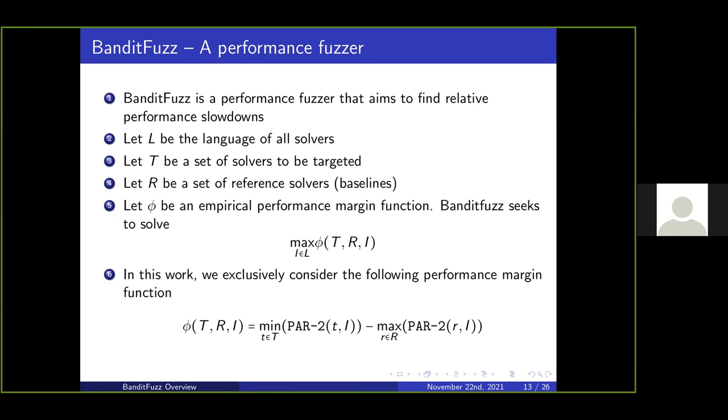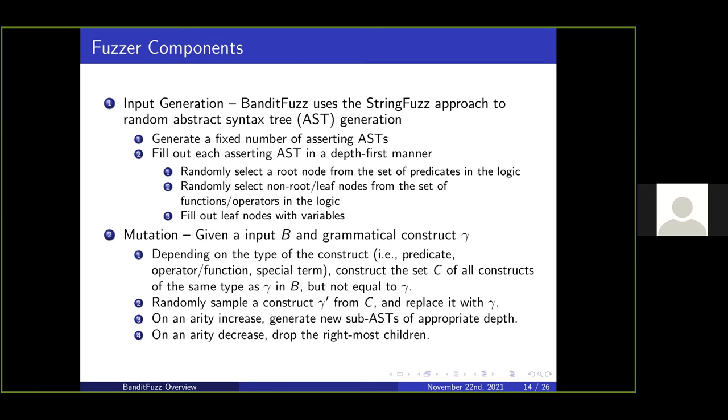We have two key components. The first is the input generator, fairly straightforward and inspired by other tools like StringFuzz. We create an AST and populate it randomly based on the problem. We pick a predicate for the root, fill it in with other constructs, then fill it out with literals or variables. For mutation, we ask the agent to fix a construct and insert a novel occurrence into the formula. We enumerate all constructs of the appropriate sort, randomly select one, fill it in, and perhaps rebalance the tree on an arity issue.